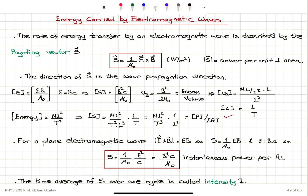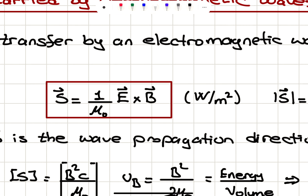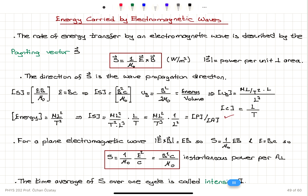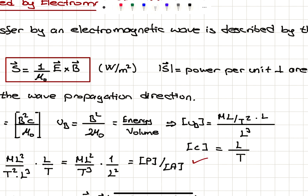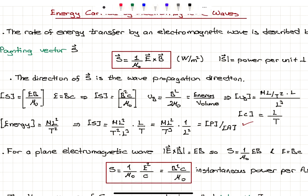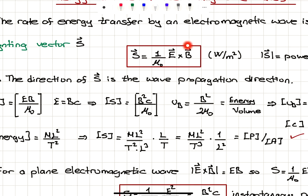Energy carried by electromagnetic waves. The rate of energy transfer by an electromagnetic wave is described by the Poynting vector. The direction of propagation was E cross B. The Poynting vector is 1 over mu zero, permeability of free space, times E cross B. It has units of watts per meter squared, which describes power carried per unit perpendicular area. The direction of the Poynting vector E cross B is the wave propagation direction.